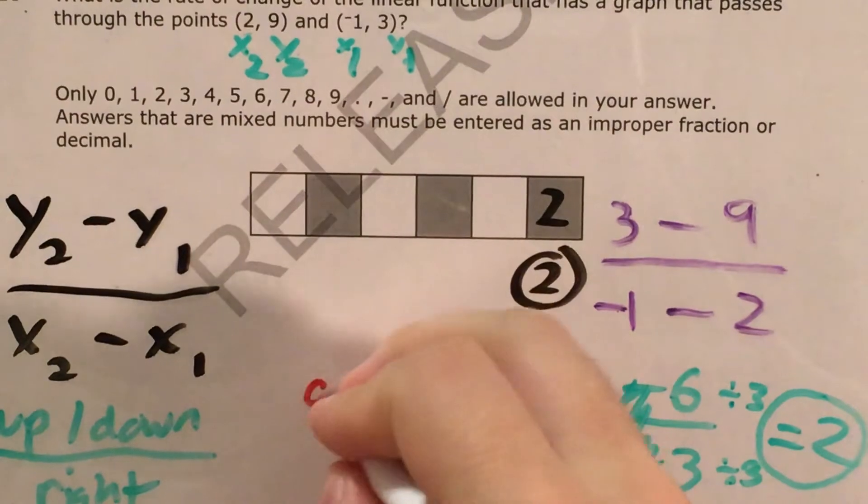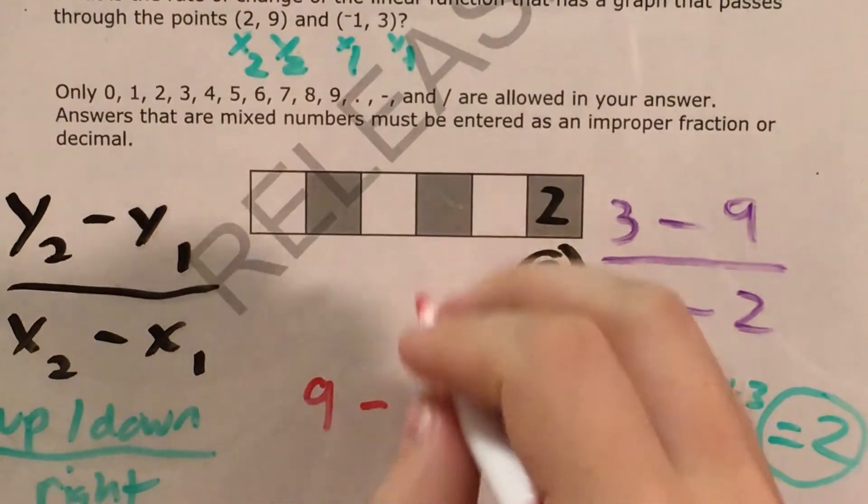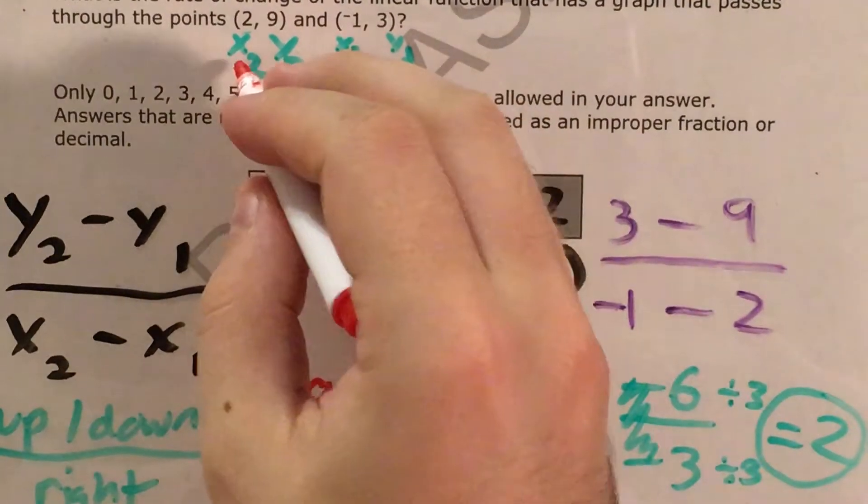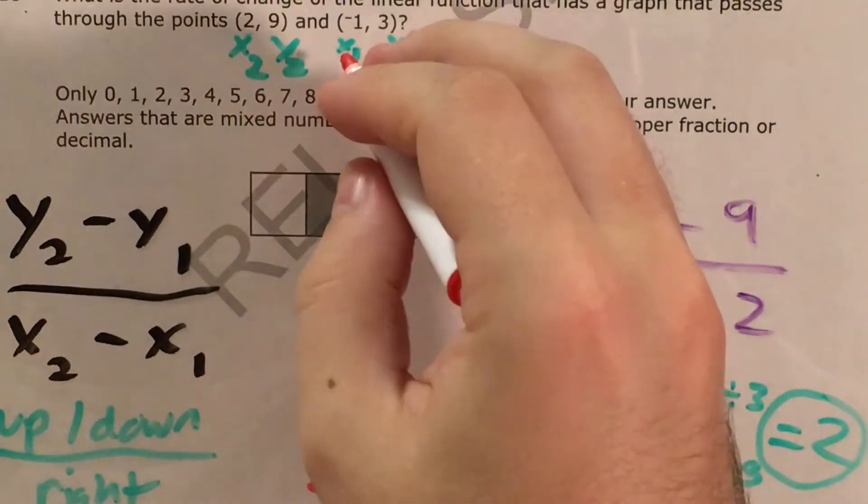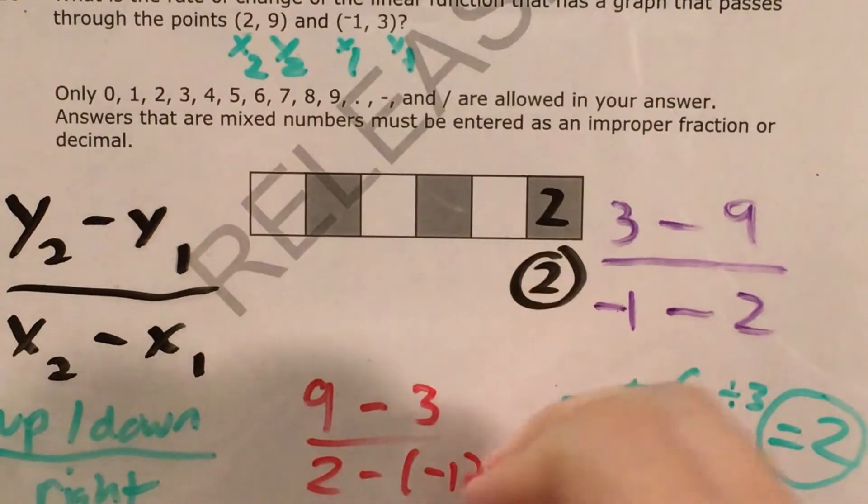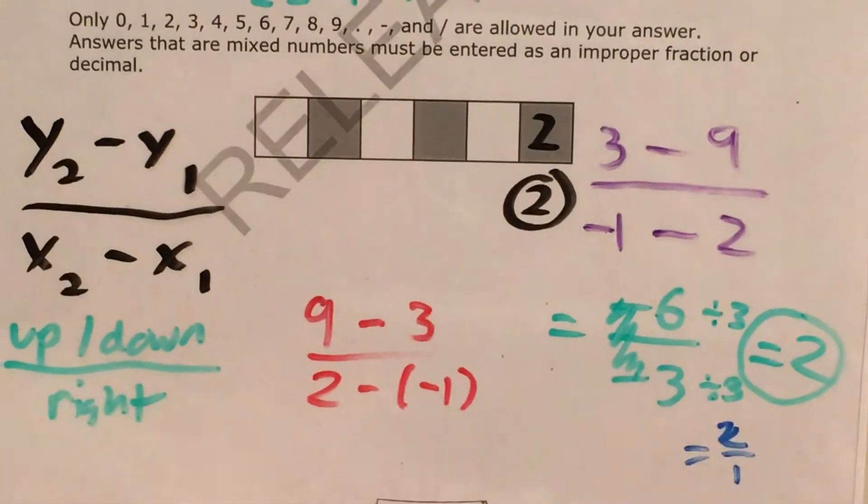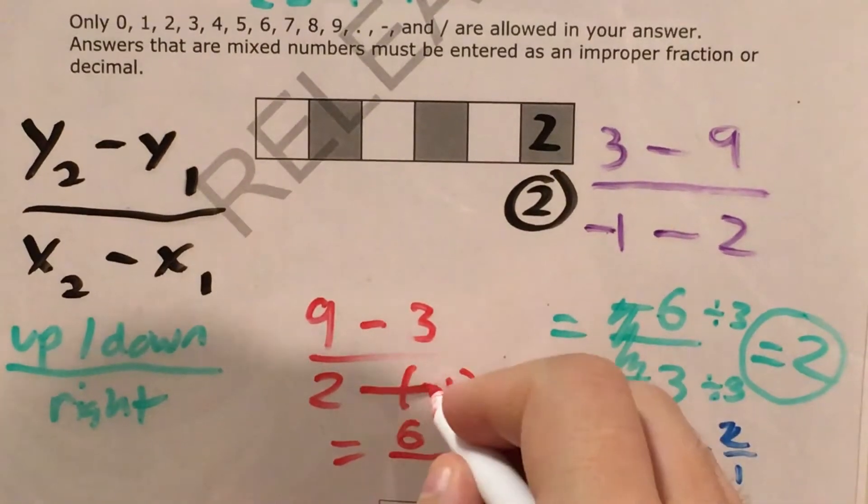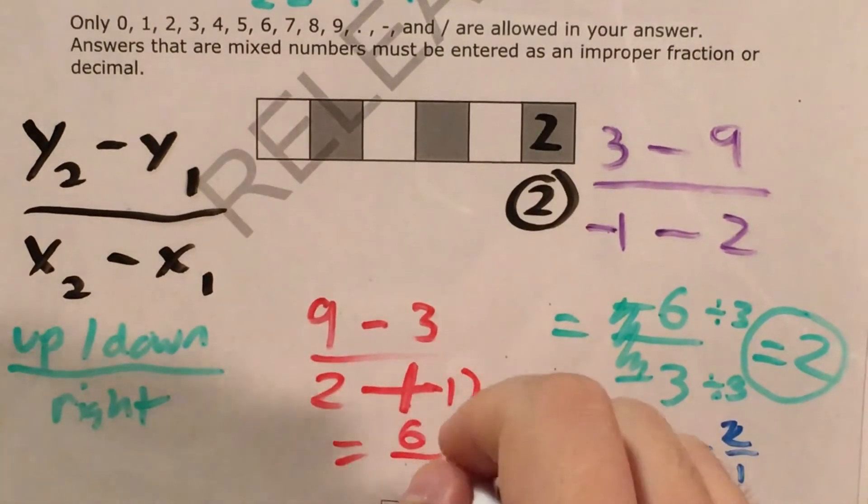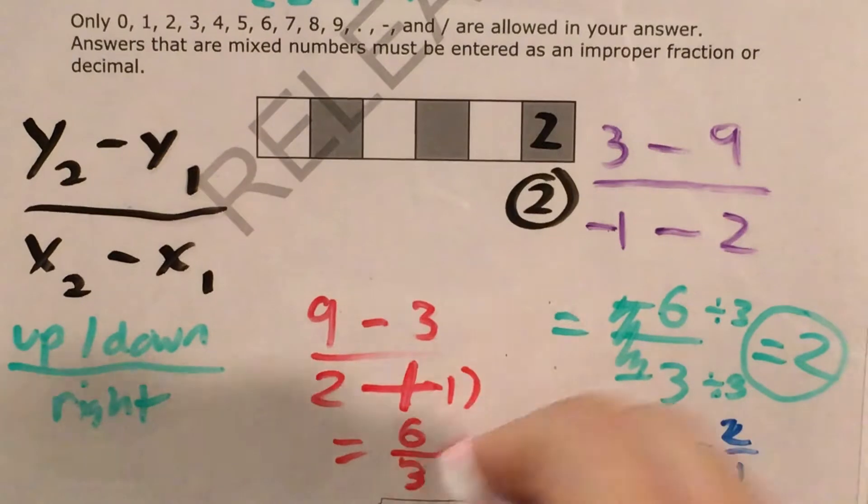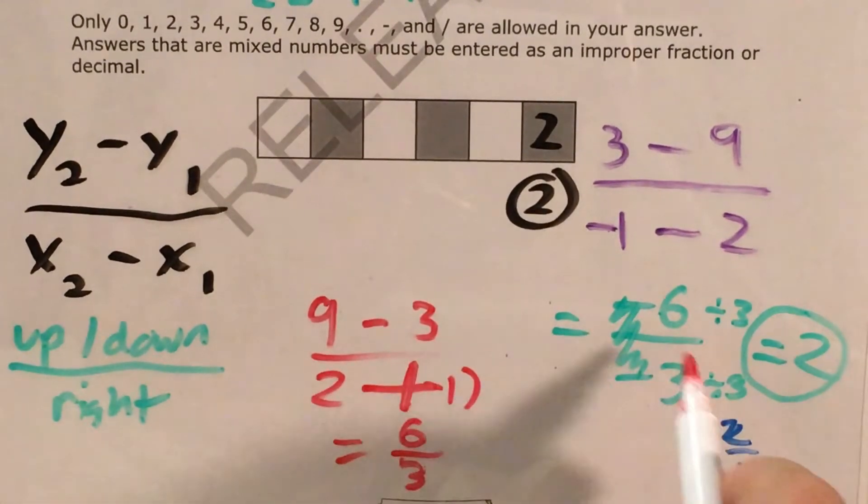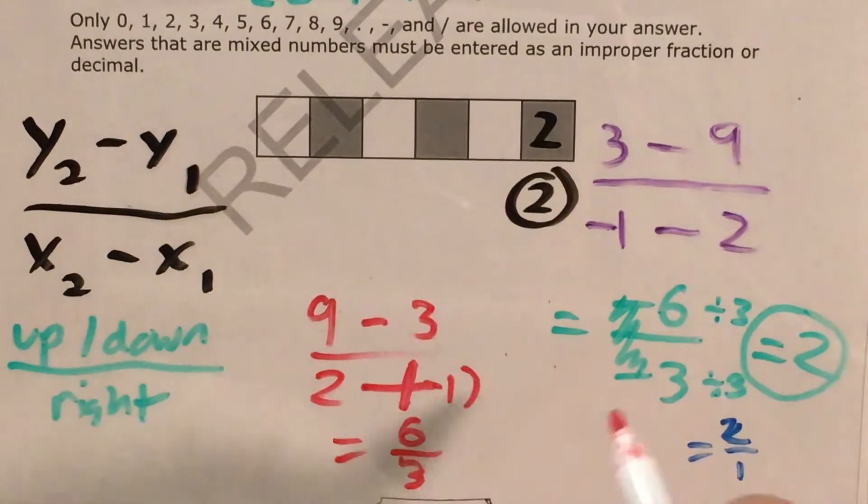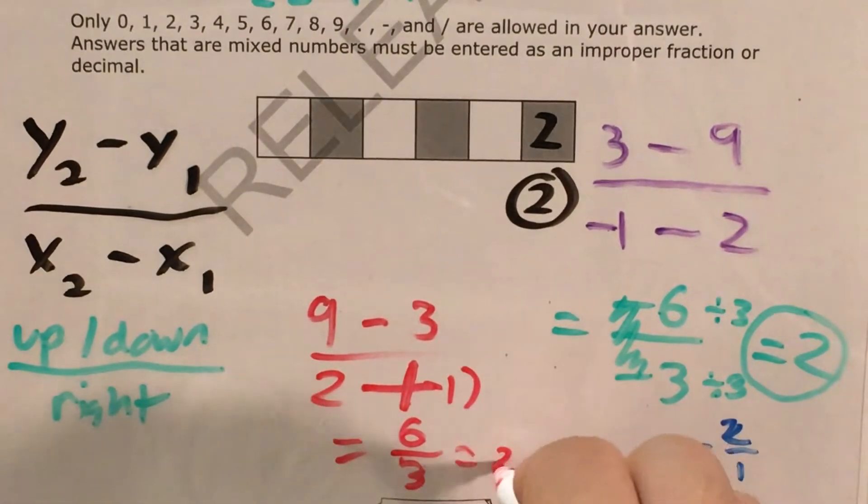Now our y2 would be 9 and our y1 would be 3. Our x2 would be 2 and our x1 would be -1. This is 9 minus 3 which is 6, over 2 minus -1, which is the same thing as 2 plus 1 if you know this trick, over 3. So 6 over 3 is essentially the same as what we got here. We just had negative signs in our numerator and denominator. This would still simplify down to 2.